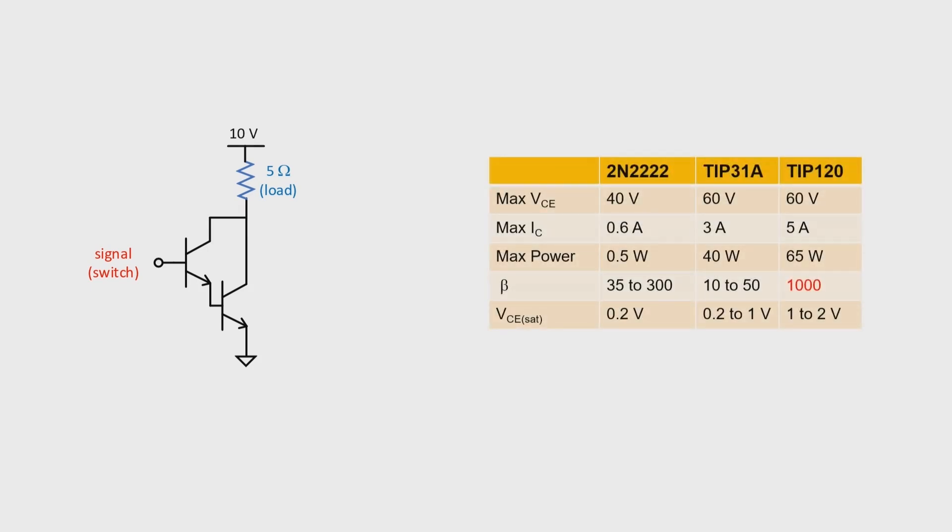Quite often, these transistors come packaged as a set. So if you just look at a Darlington transistor, it has three terminals and it kind of looks like an ordinary transistor. You can only tell it's a Darlington pair when you look at the datasheet or you notice that the beta is exceptionally high. Let's assume here that we're going to use the TIP120, which is one of these packaged sets.